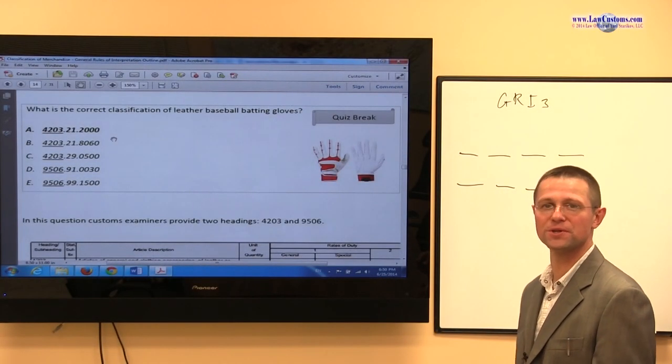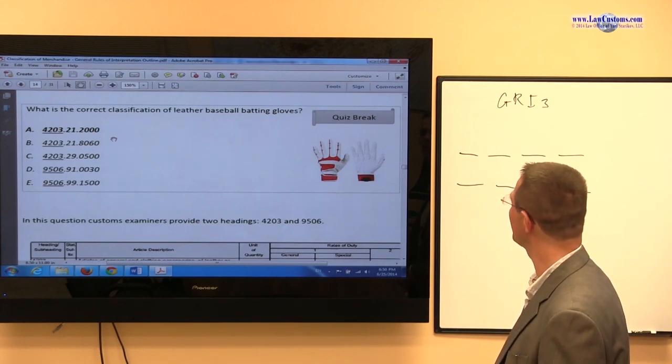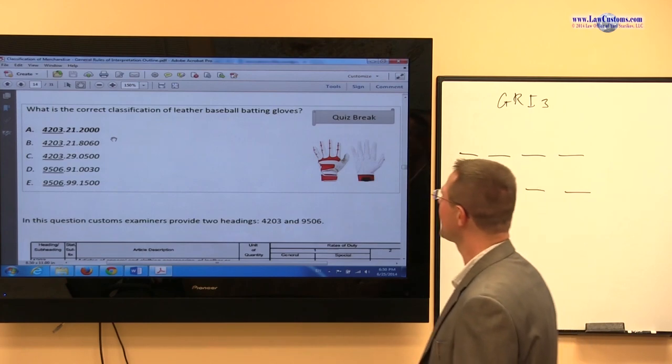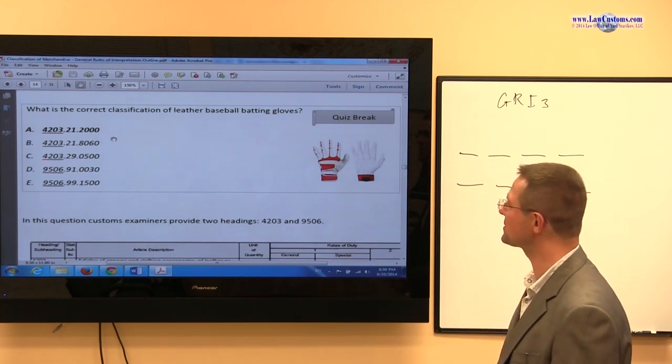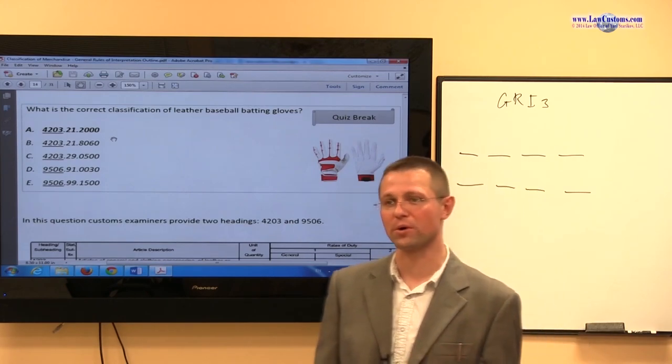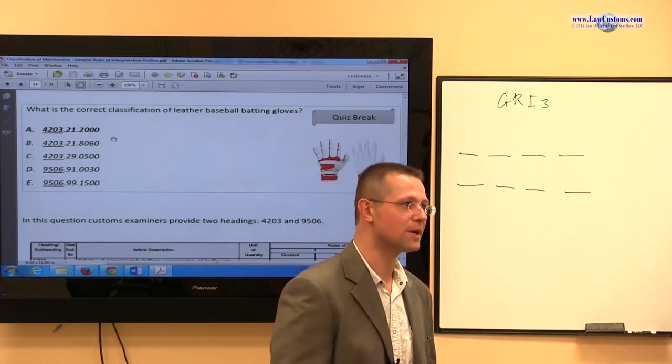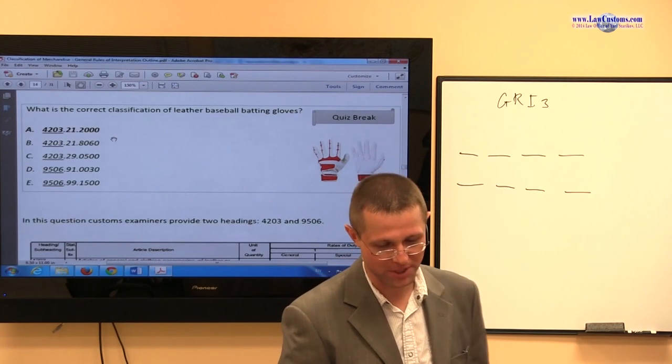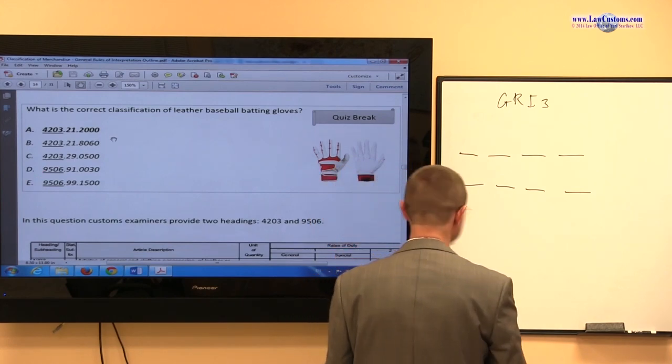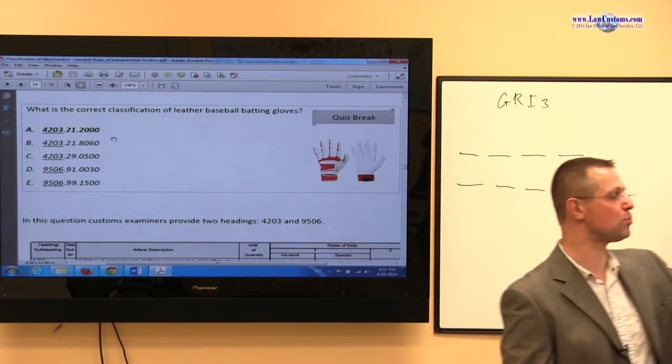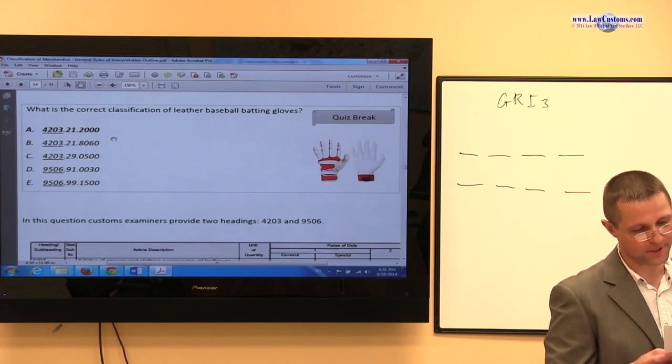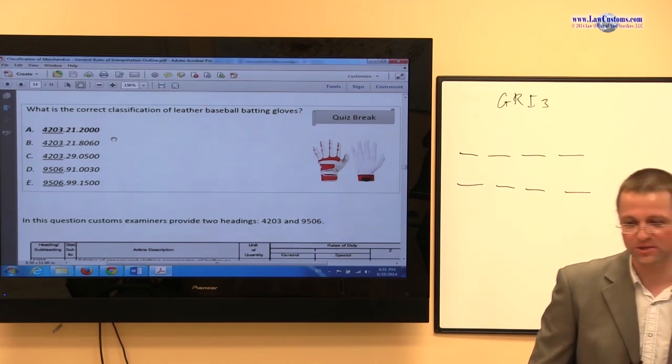They're kind of unique type of product, so now here Customs Examiner gives us two headings. Remember GRI3 is two or more, right? So here we really face a question. If we analyze the heading, we will see that 95.06 provides for articles of sports, the sporting equipment, and 95.42 provides for articles of leather.